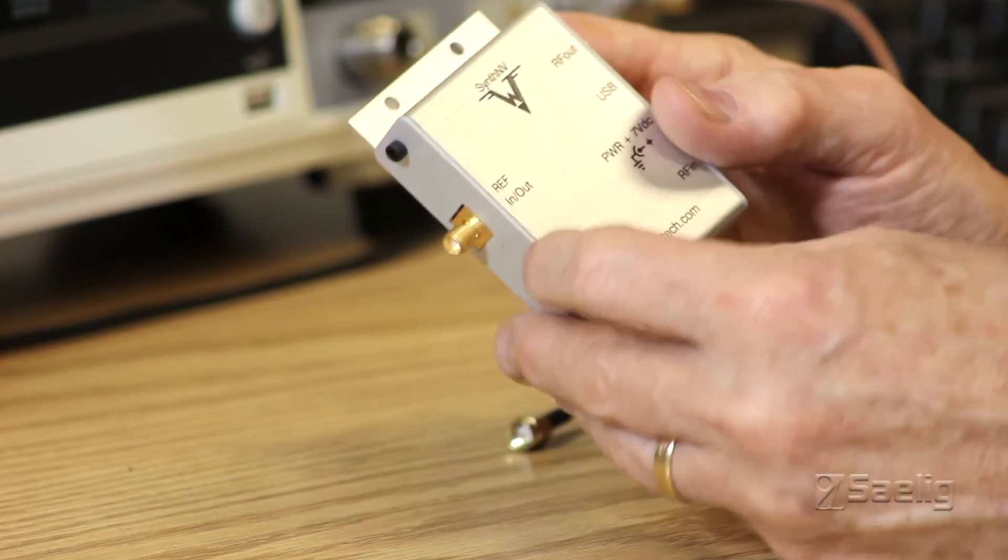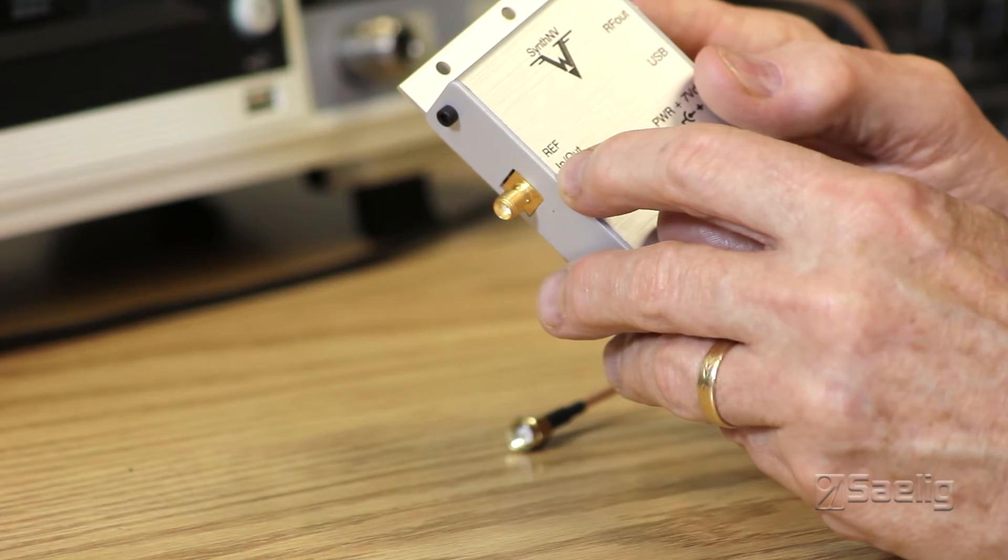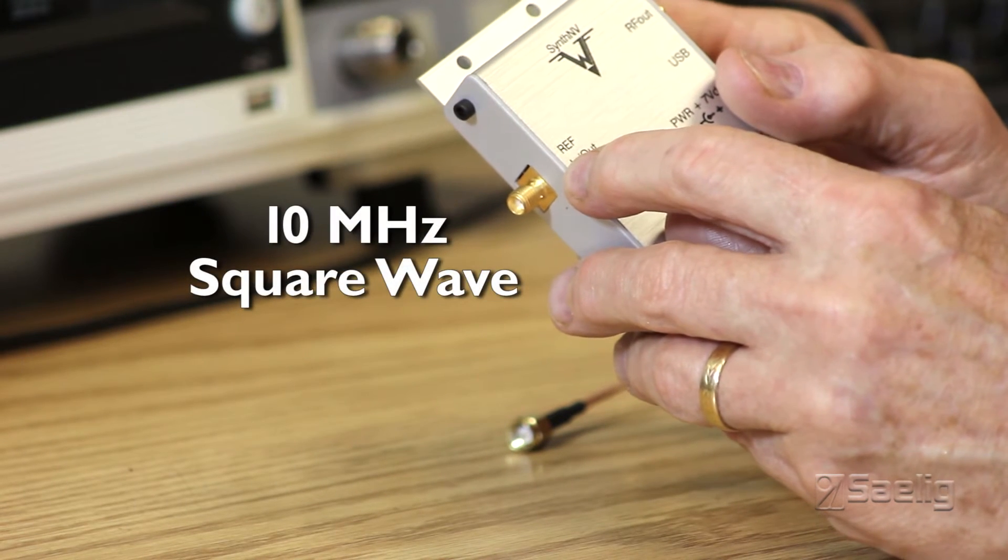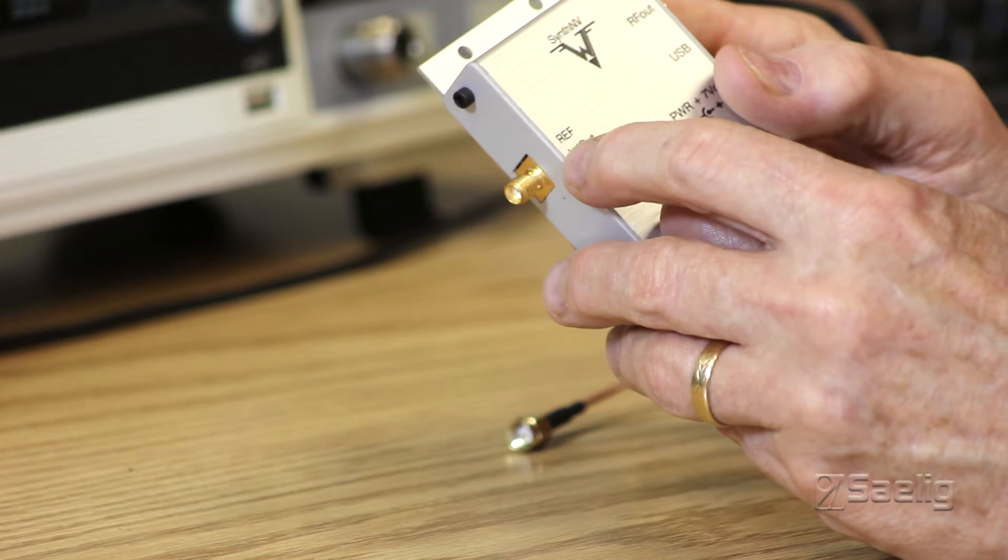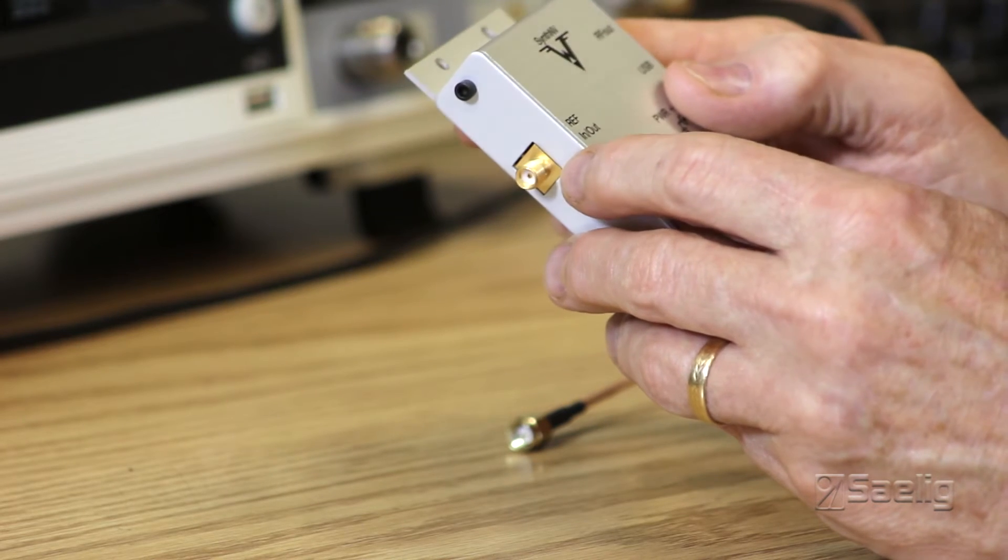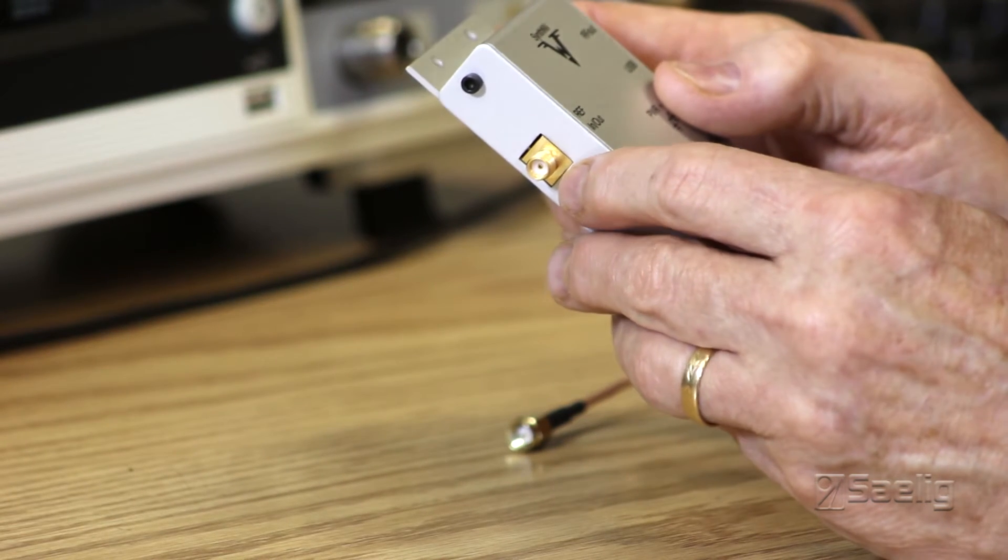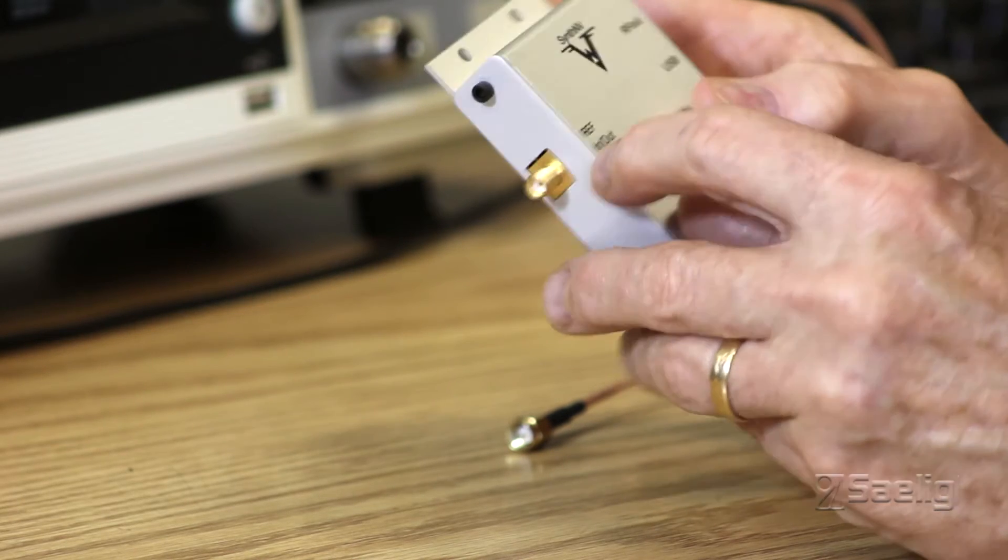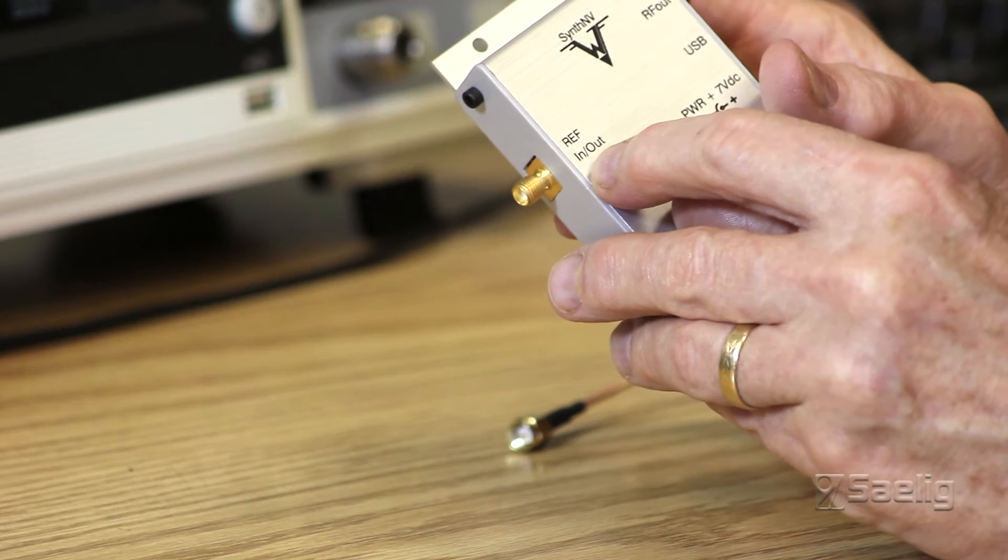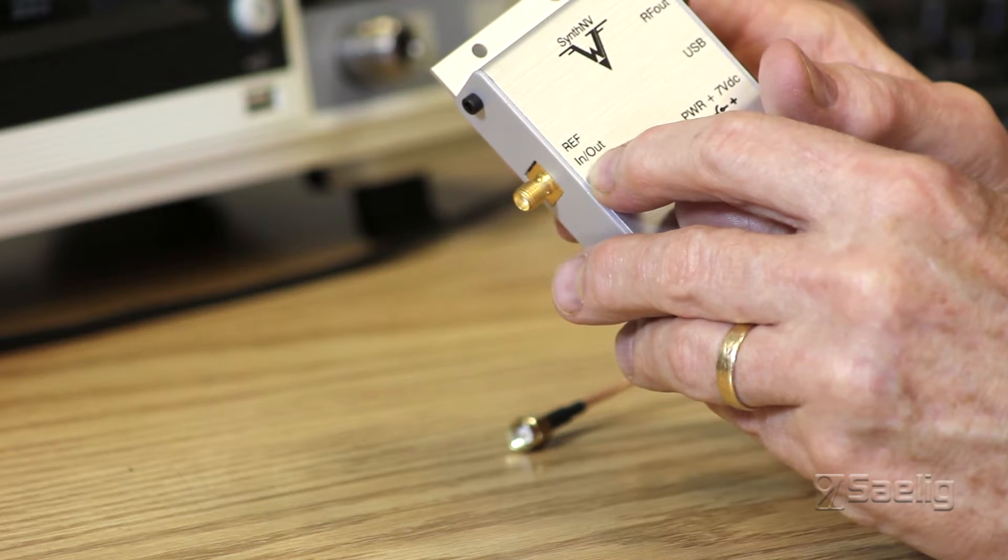The third thing that it has is a reference oscillator output right here which is a 10 megahertz square wave and it's a pretty nice steady square wave that you can monitor on your oscilloscope if you want to see it but this port here is also configurable because it can be an input.